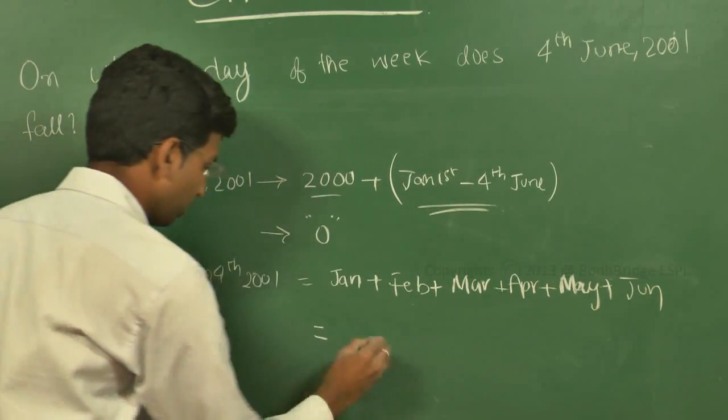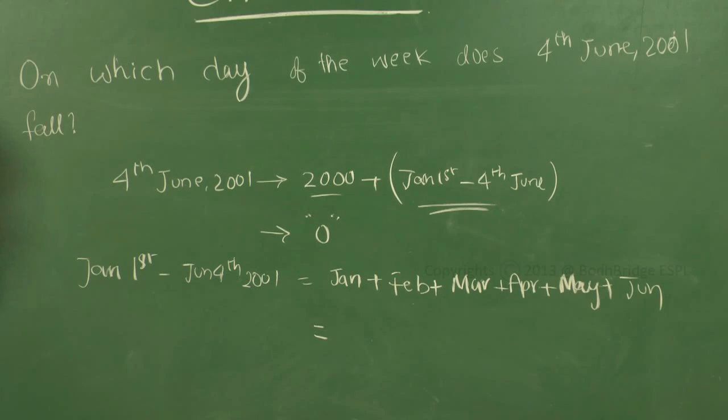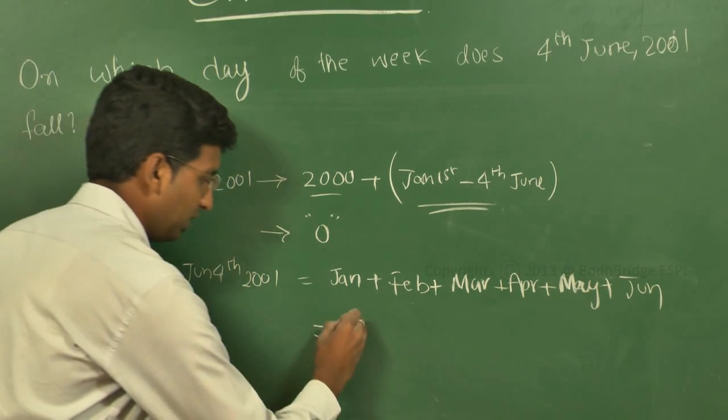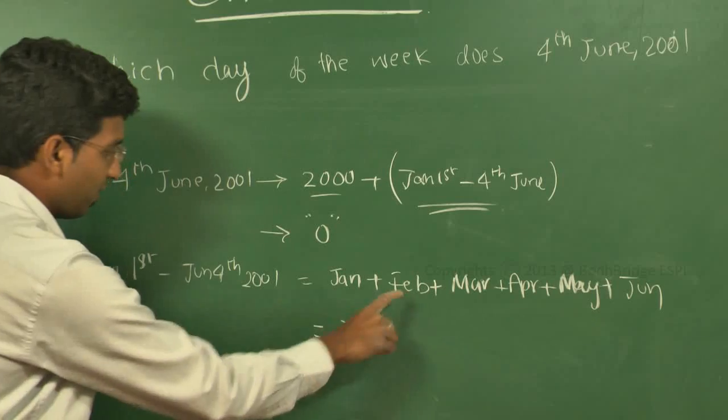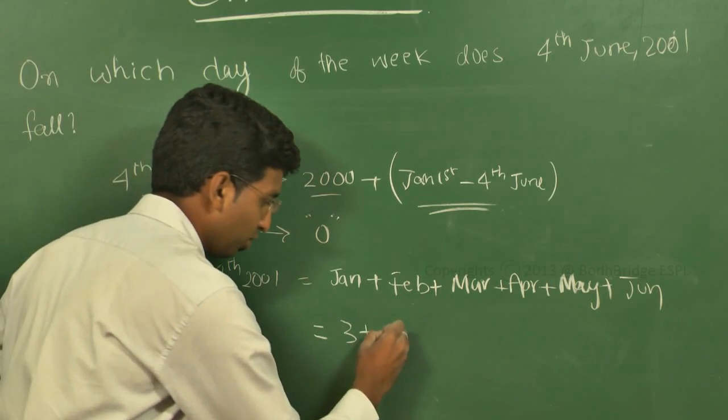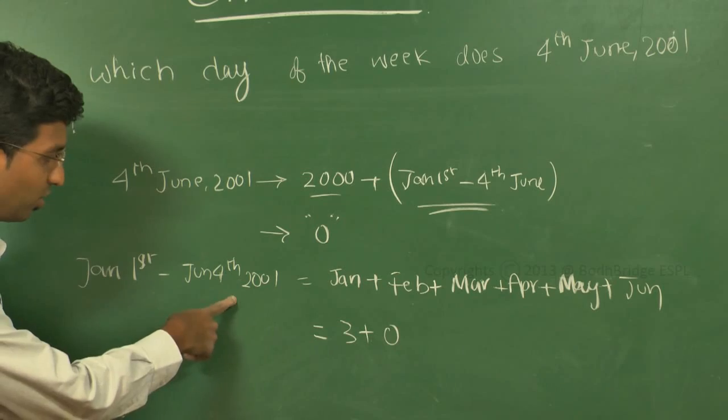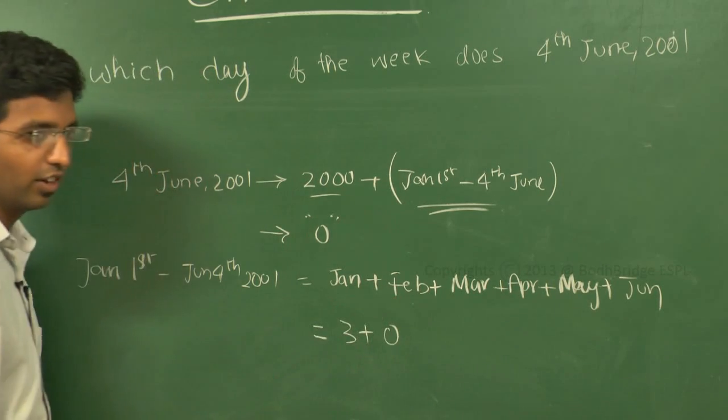Let us go month by month and see how many odd days are coming. In January, the number of odd days will be three. In February, the number of odd days will be zero since it is 2001, and 28 days will be there because it's a non-leap year. 28 divided by 7 equals zero odd days.